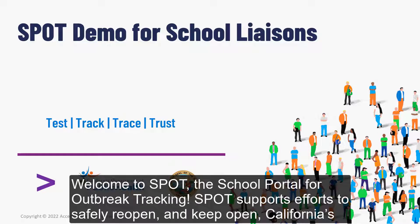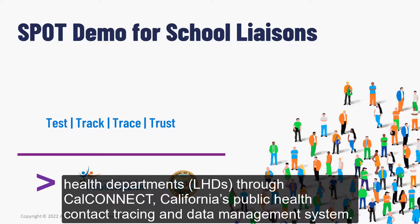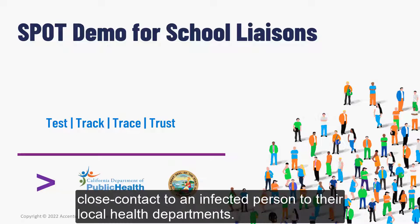Welcome to SPOT, the school portal for outbreak tracking. SPOT supports efforts to safely reopen and keep open California schools and accelerate contact tracing efforts by facilitating collaboration and sharing of information between schools and their local health departments (LHDs) through CalConnect, California's public health contact tracing and data management system. SPOT is a secure system for school liaisons to easily enter key information about individuals who tested positive for COVID-19 or were in close contact to an infected person to their local health departments.